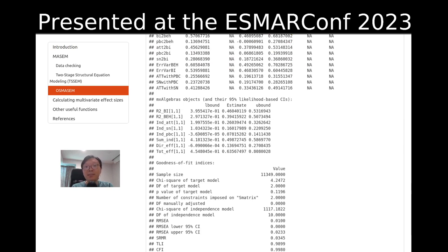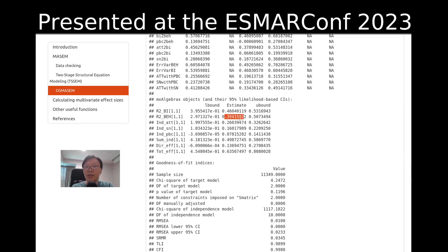More importantly, we get extra outputs. For example, the R-square on BI has an estimate of 0.46 with a 95% CI of 0.39 to 0.53. Similarly, we get the R-square on BH, and then the various indirect effects, direct effects, and sum of indirect effects.